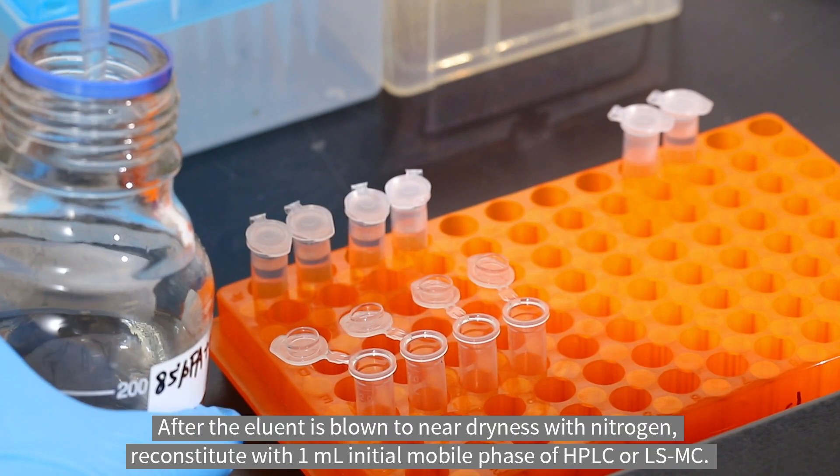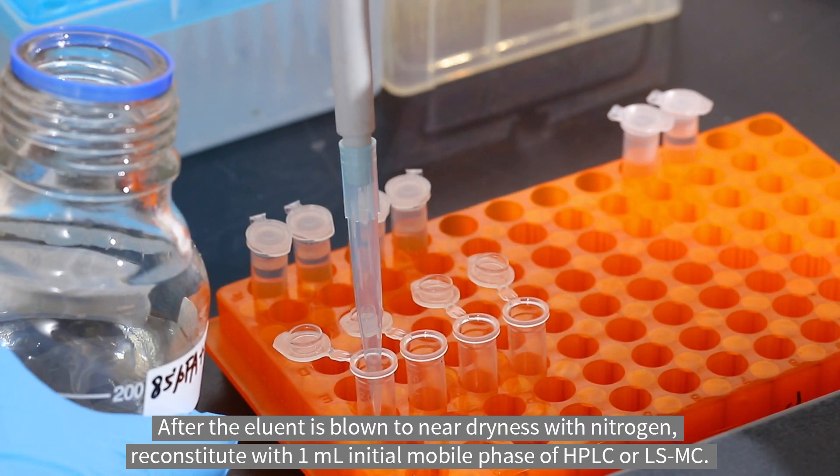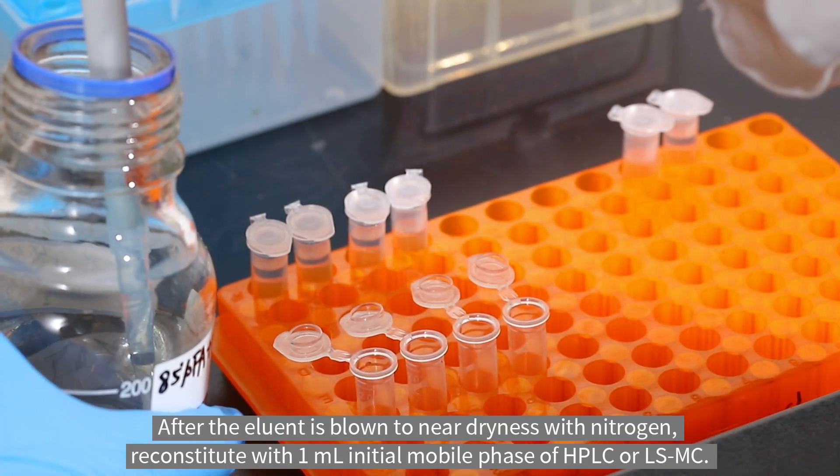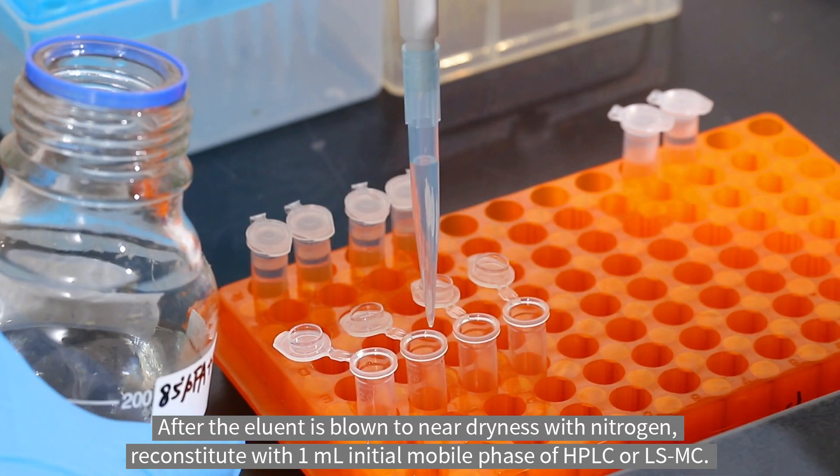After the eluent is blown to near dryness with nitrogen, reconstitute with one milliliter initial mobile phase of HPLC or LC/MS.